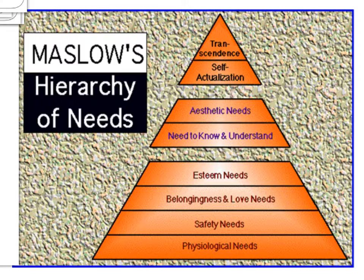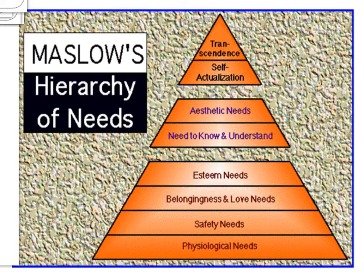Maslow's Hierarchy of Needs is represented as a pyramid. At the base are physiological needs — the most basic human and animal instincts required for survival: air, food, drink, shelter, warmth, and sleep. Above these are safety needs: protection from harmful elements, security, order, law, stability, and freedom from fear.